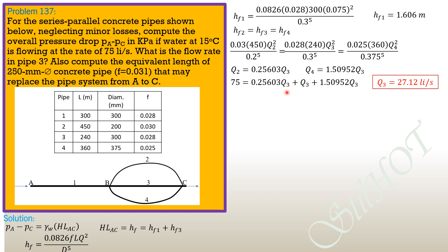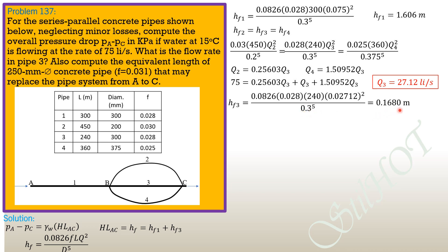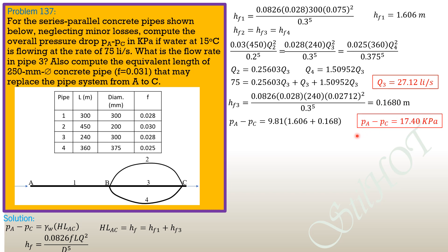To find the equivalent length, first compute HF3: 0.0826 times 0.028 times 240 times (0.02712)² over (0.3)⁵ equals 0.1680 meters. The total head loss from A to C is 1.606 plus 0.168 meters. Therefore, P_A minus P_C equals 9.81 times (1.606 + 0.168) equals 17.40 kilopascals.